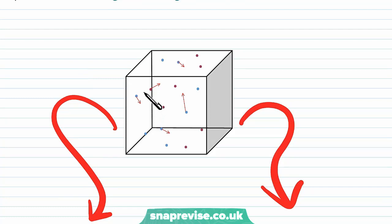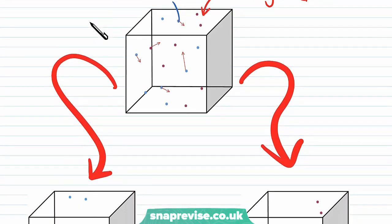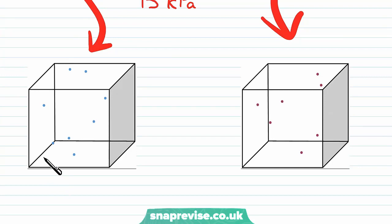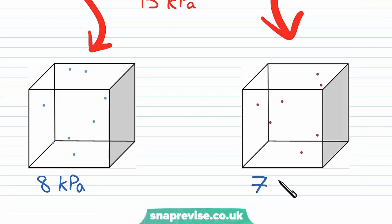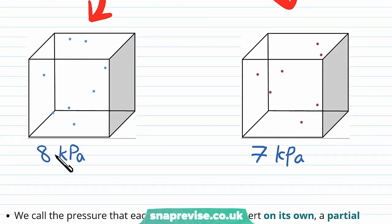In other words, the gas just can't see any of the other molecules. So if we had one type of gas with blue particles and a different type shown with maroon particles — gas 2 — then the total pressure of 15 kilopascals is just the sum of what the pressures would be if we had each individual gas on its own. Say the blue gas exerts 8 kilopascals and the red gas exerts 7 kilopascals — 8 plus 7 equals 15.